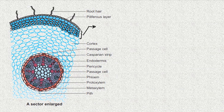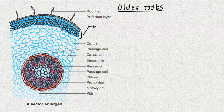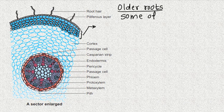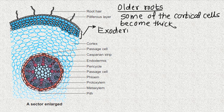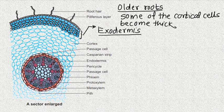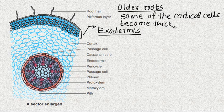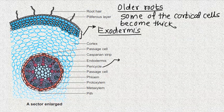In older monocot roots, some of the cortical cells become thick and form a few-layered thick structure called exodermis. The functions and structure of the cortex are the same otherwise. Endodermis, in the same way, will reveal the vascular flow and check the movement of water — all these functions are common.